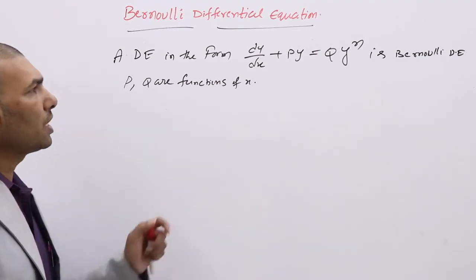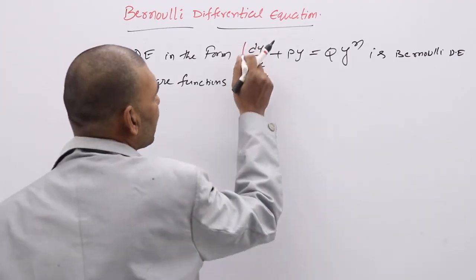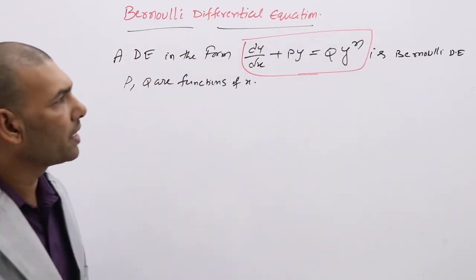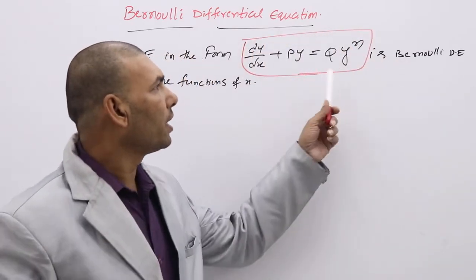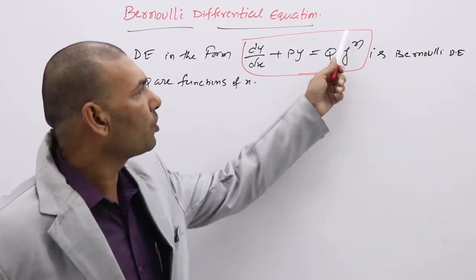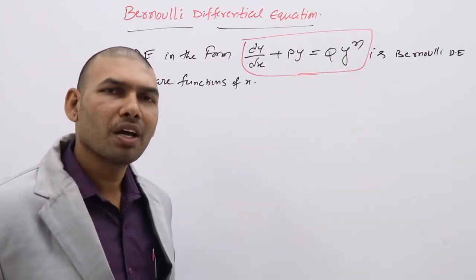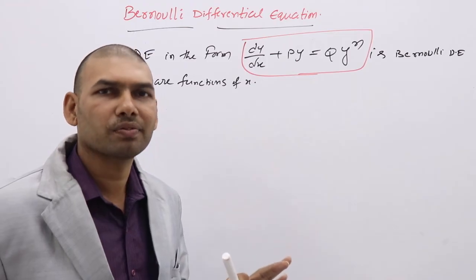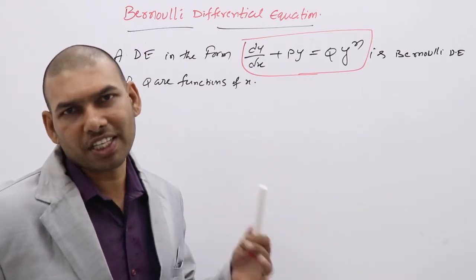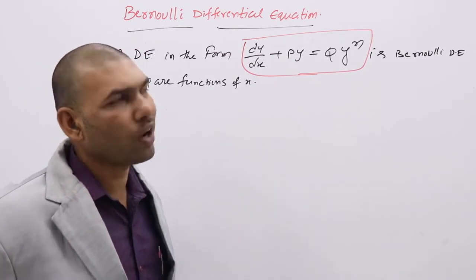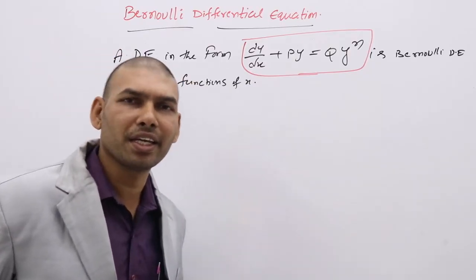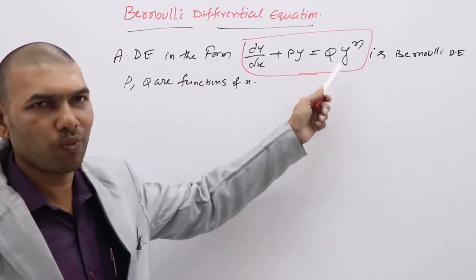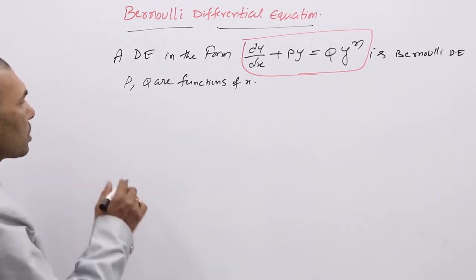The difference between a linear and a Bernoulli DE is that in a linear differential equation you won't have y^N on the right-hand side — the RHS is a function of x only. But in a Bernoulli DE you will have y terms like y squared, y cubed, and so on.